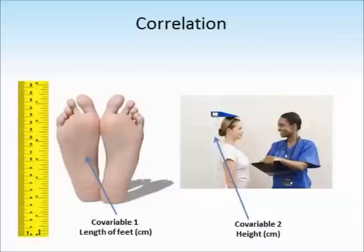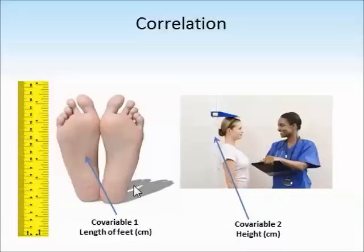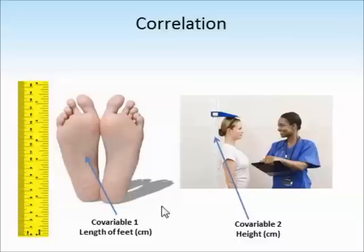Correlations don't have IVs or DVs. Correlations are very different from experiments. In a correlation, we're looking for a relationship between two variables. For example, I could see if there's a relationship between height and foot length. I can't deliberately change either of those variables — I can't make somebody shorter or taller and I can't make their feet longer. So there can't be an independent variable, because an independent variable is something that is deliberately changed. In this study I would just take two measurements from each participant: how tall they are and the length of their feet, then see if the two are related.